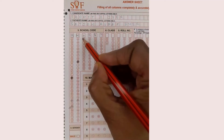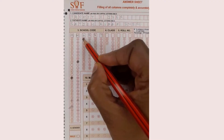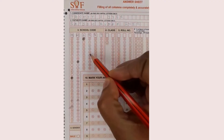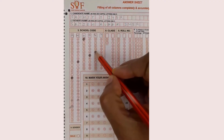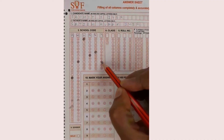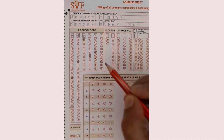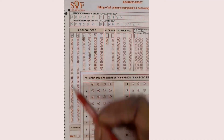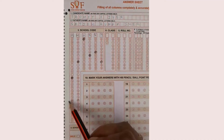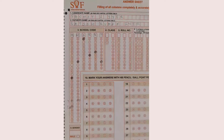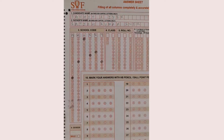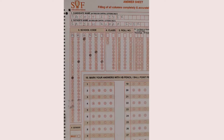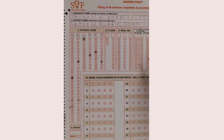For example with the code MH0547: M, H, then 0, then 5, 4, and 7 — one bubble only per column. If you have done everything correctly on your exam but have not filled the OMR sheet correctly, you would lose good marks.